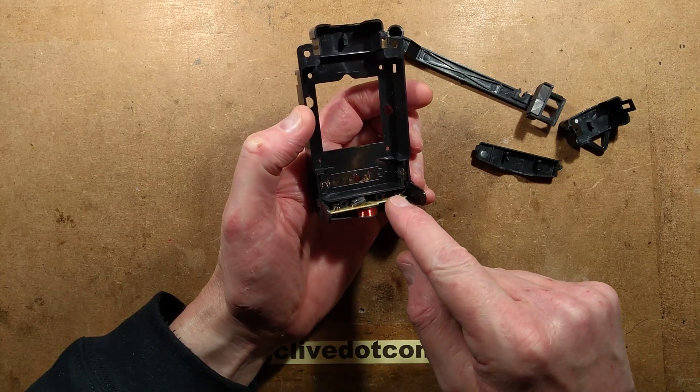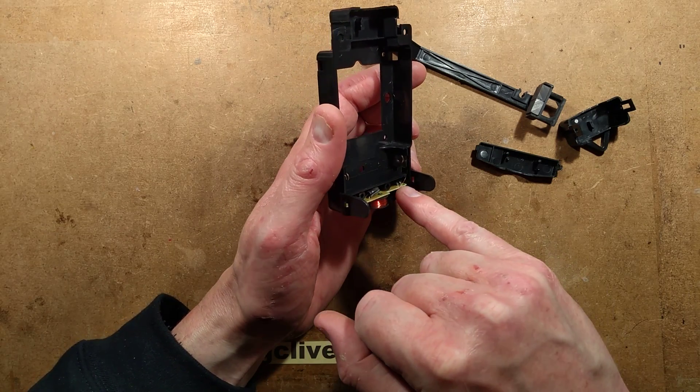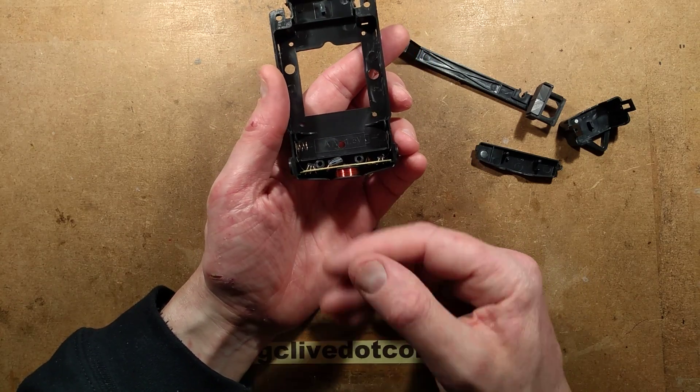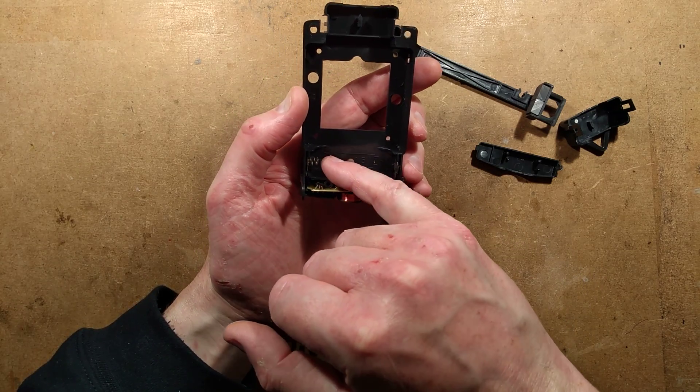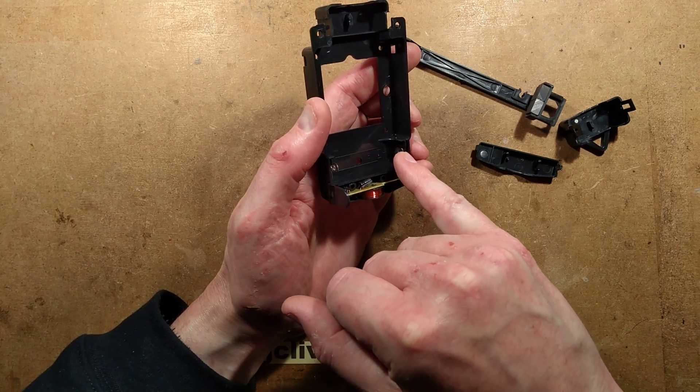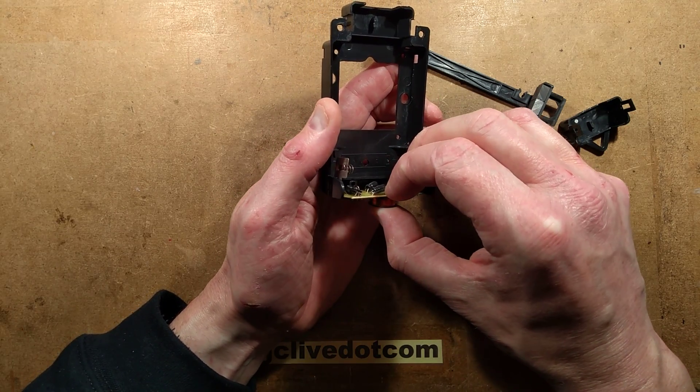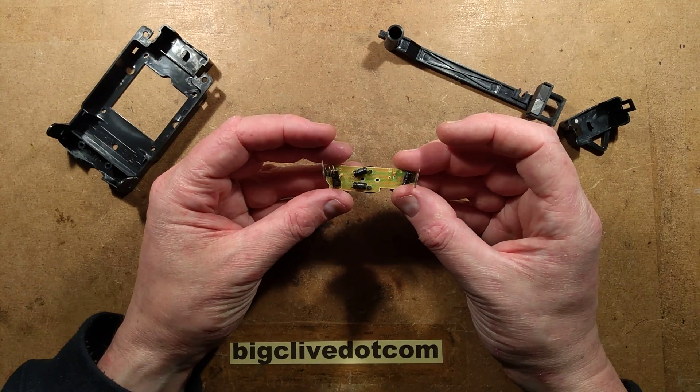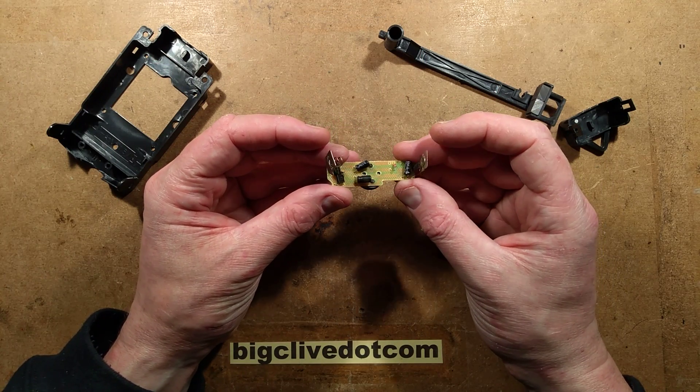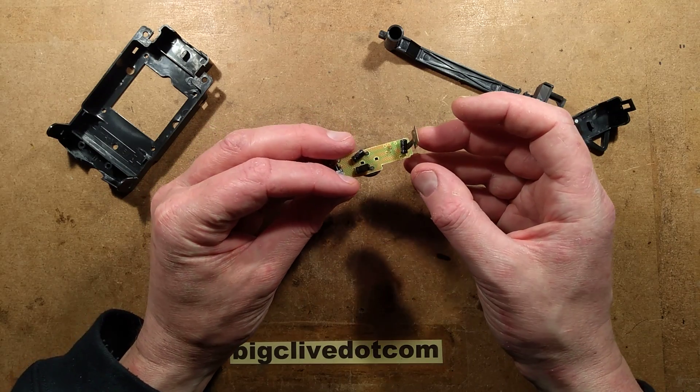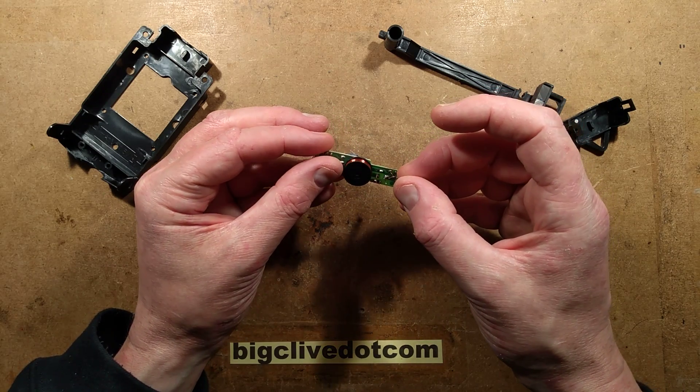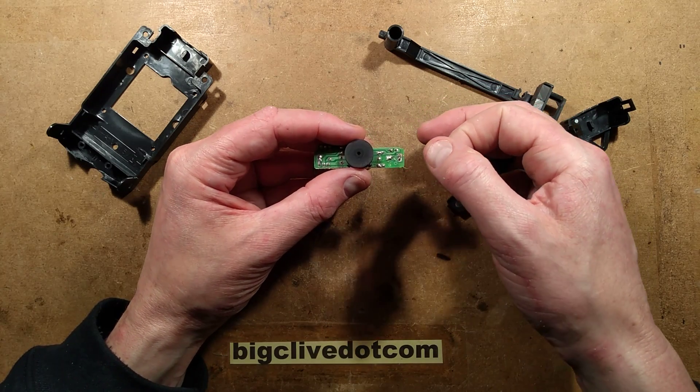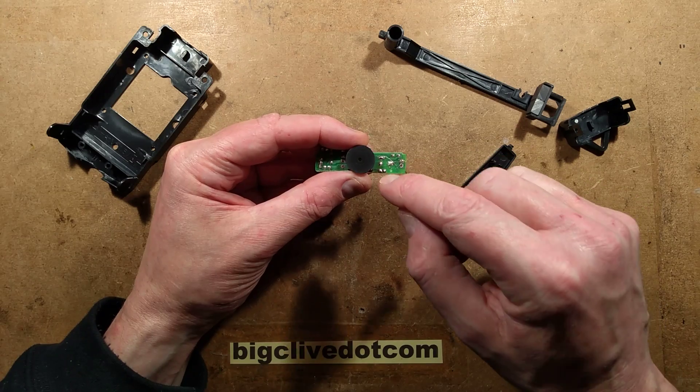We have the classic arrangement of the circuit board with the battery contacts that look as though they're soldered straight down. The whole lot slides in with the battery contacts and slides out. It's got three capacitors. They've done that thing where there's the coil with ultra-fine wire and they've just pulled the wires out and blobbed them onto solder pads.